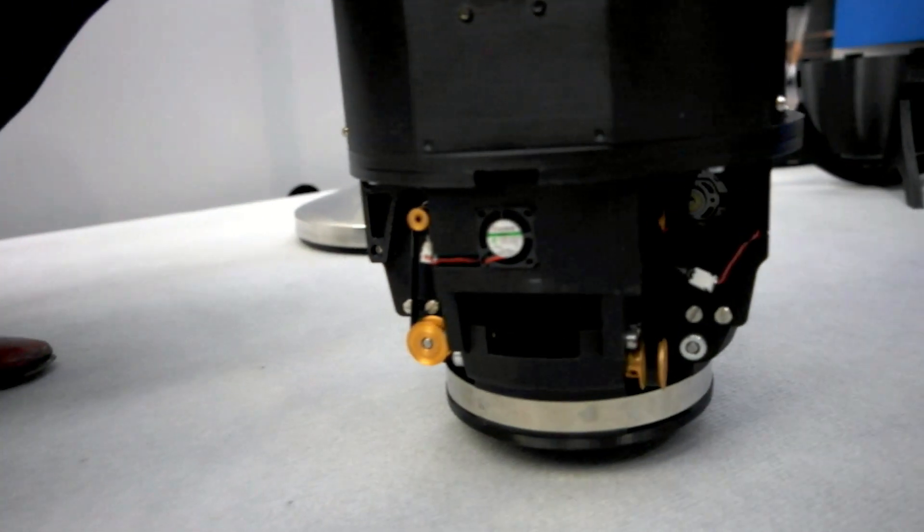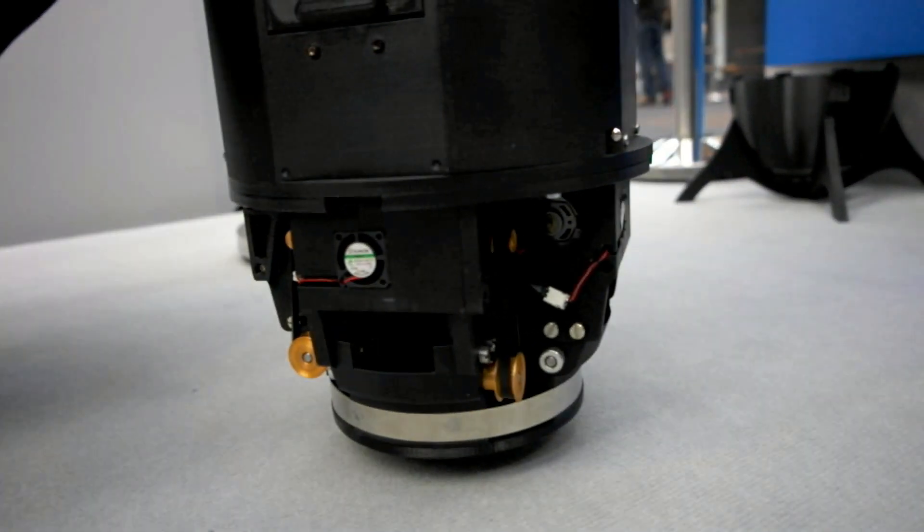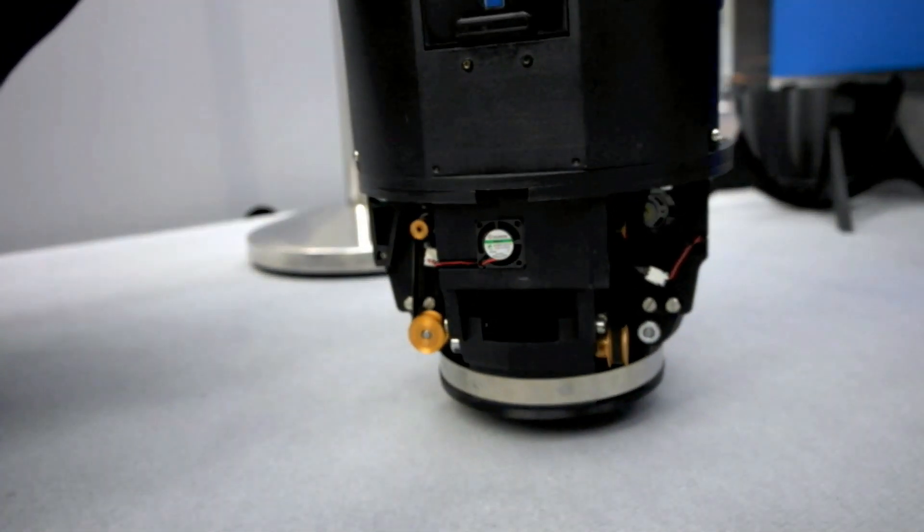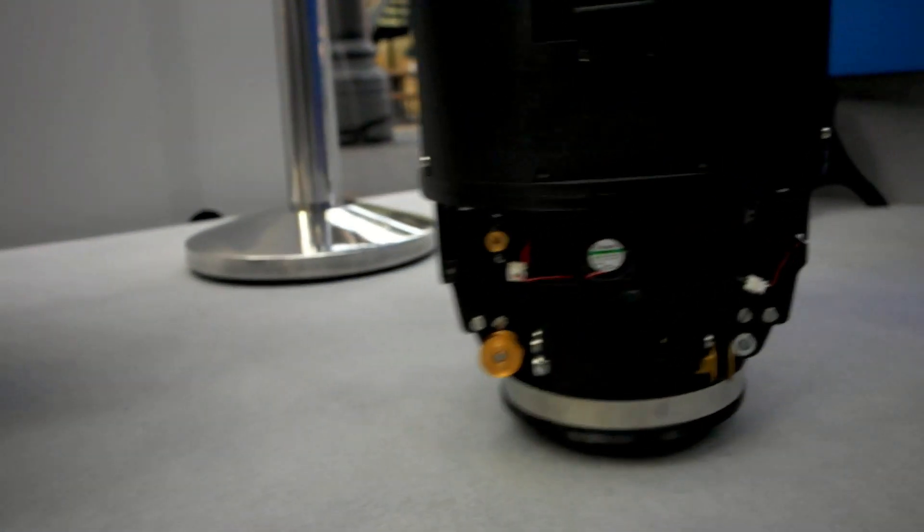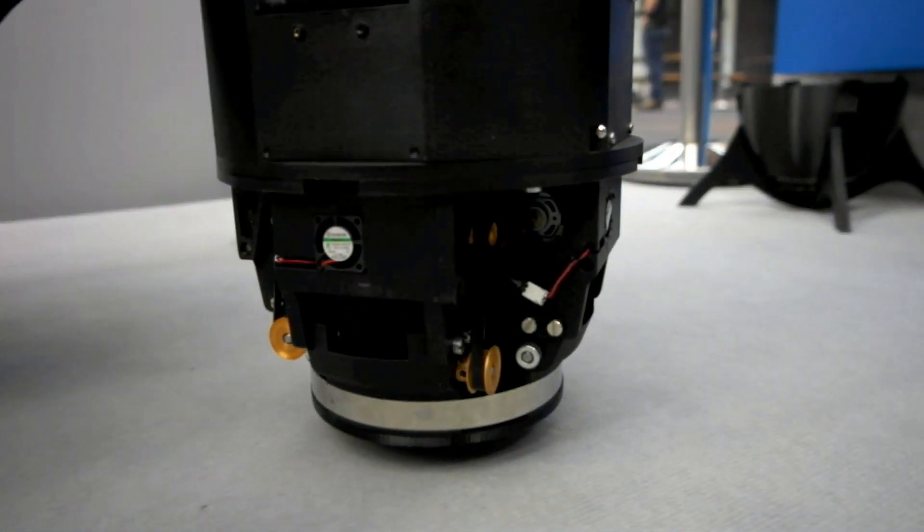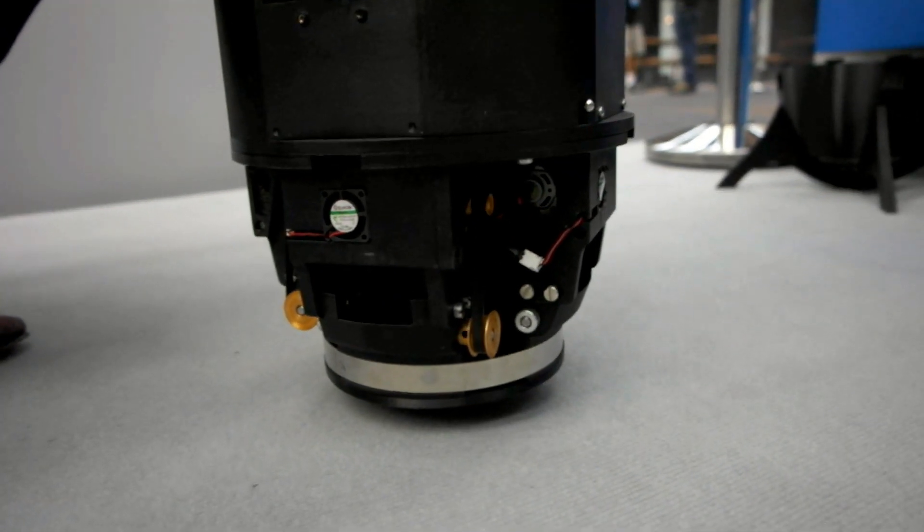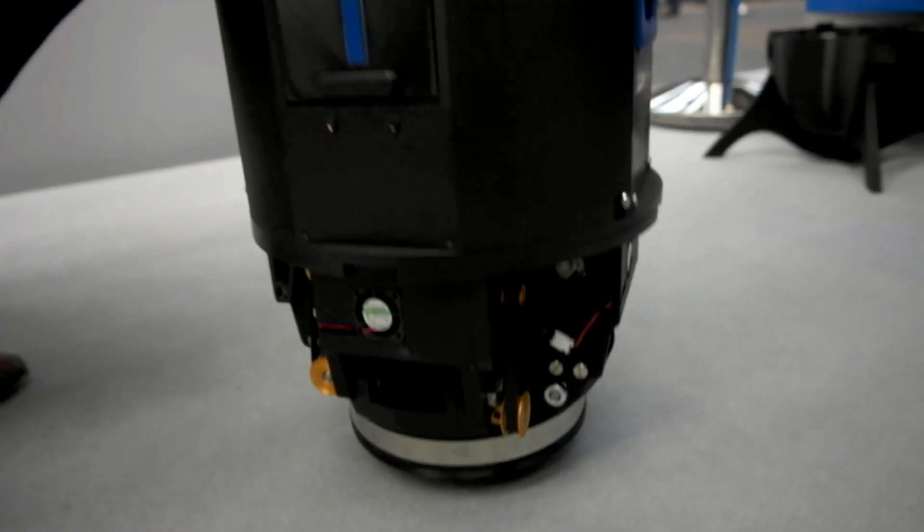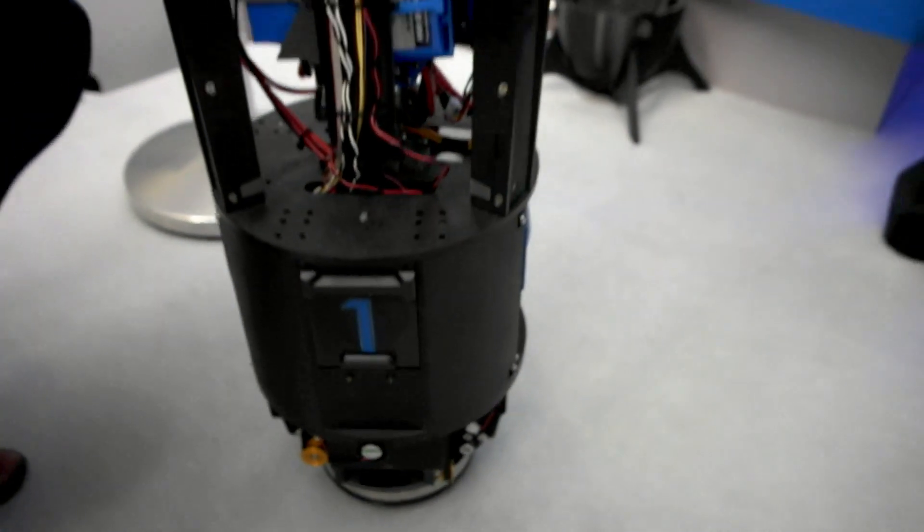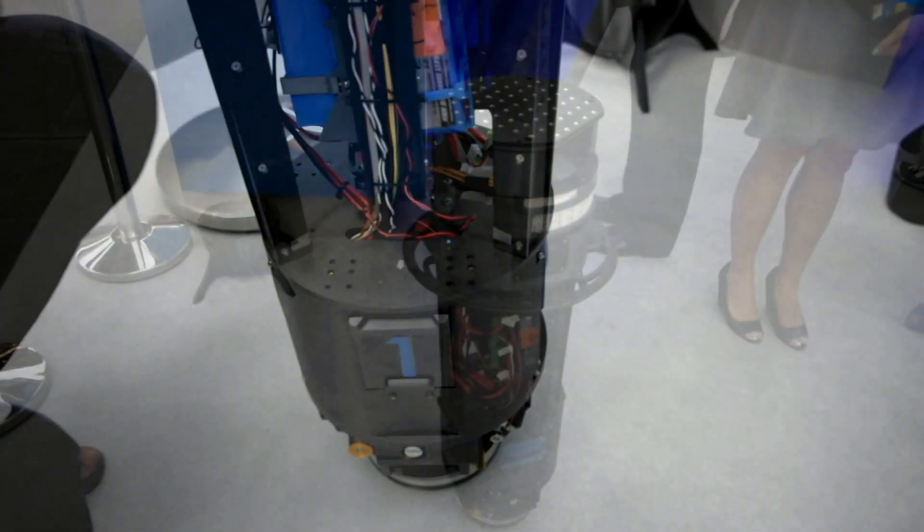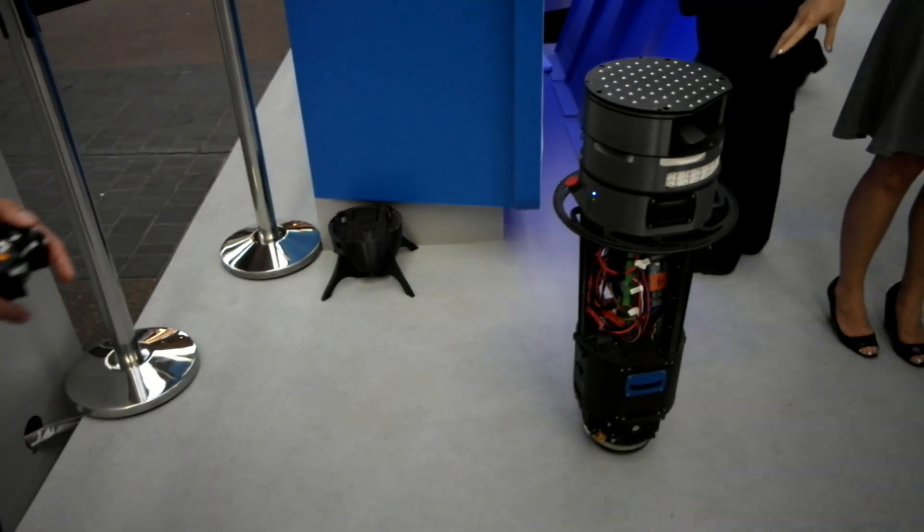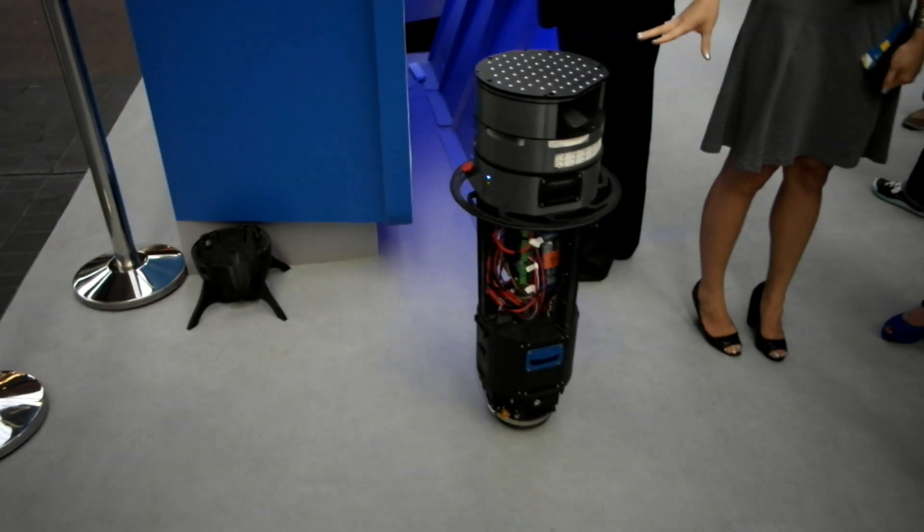And then finally the ball of course is omnidirectional, which makes it very easy to navigate in very complex spaces. Because we can essentially change direction without having to turn around. So omnidirectional, physical compliance and tall and narrow are the three real magical properties of this particular robotic platform.